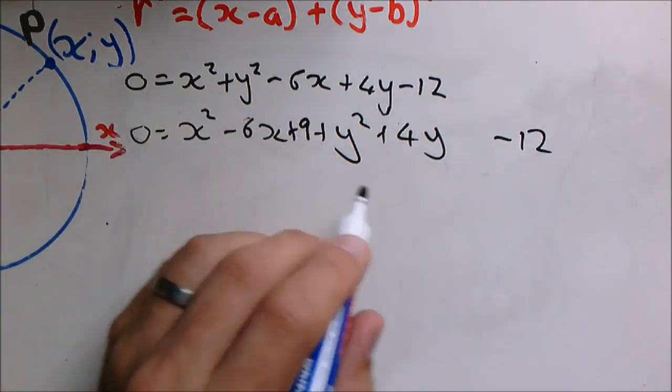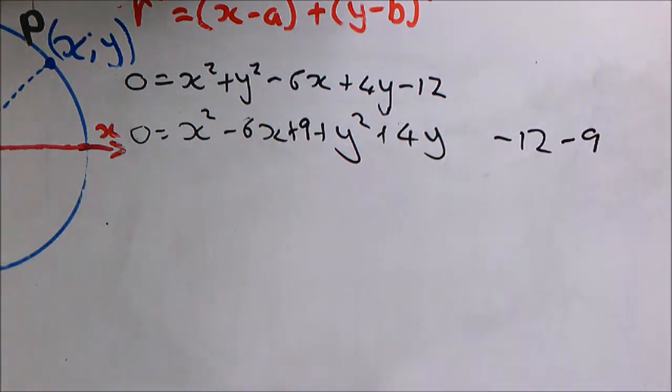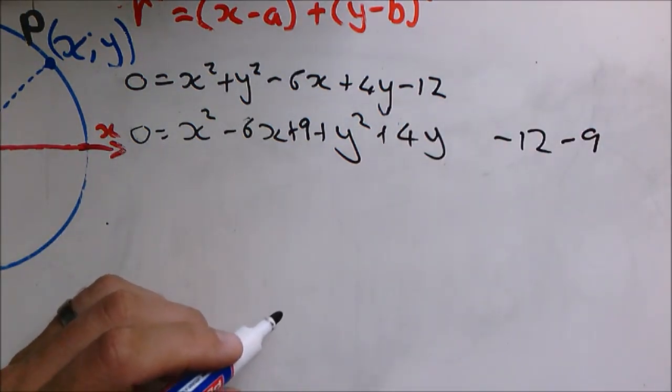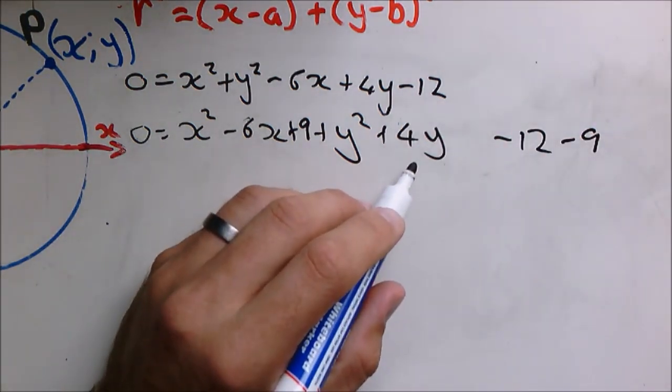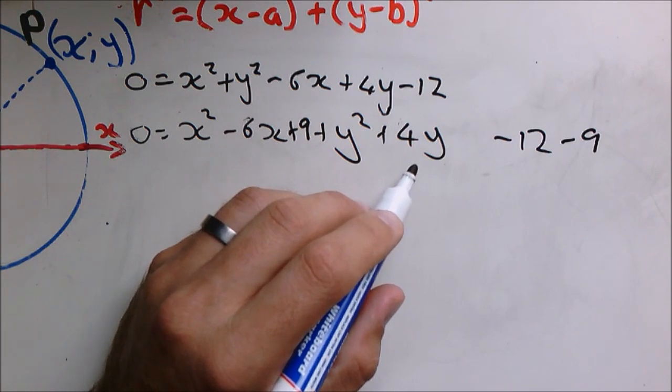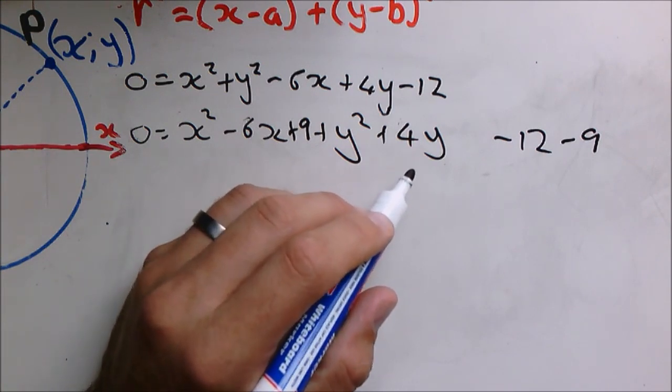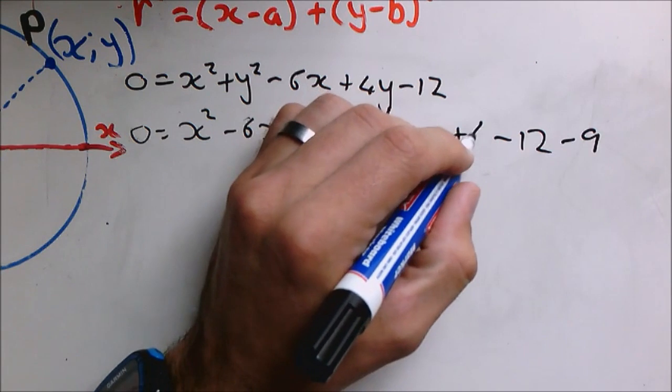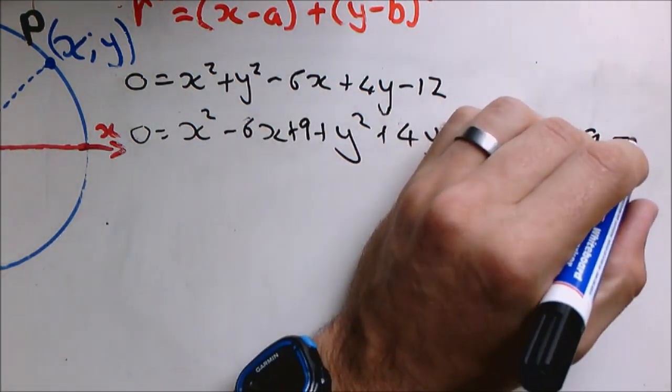Whatever I add over here, I have to subtract on that side. And if b is 4, then b over 2 is 2 and b over 2 squared is 4. Again, what I add here, I have to subtract.